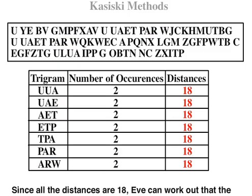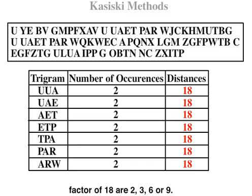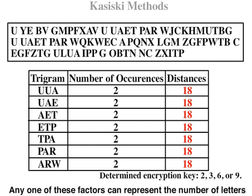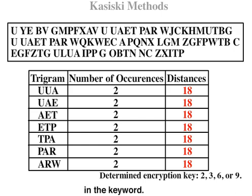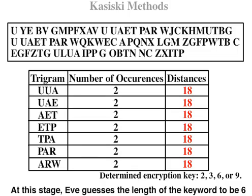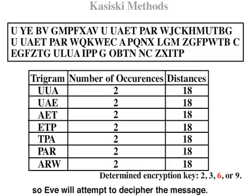Since all the distances are 18, Eve can work out that the factors of 18 are 2, 3, 6, or 9. Any one of these factors can represent the number of letters in the keyword. At this stage, Eve guesses the length of the keyword to be 6, so Eve will attempt to decipher the message.